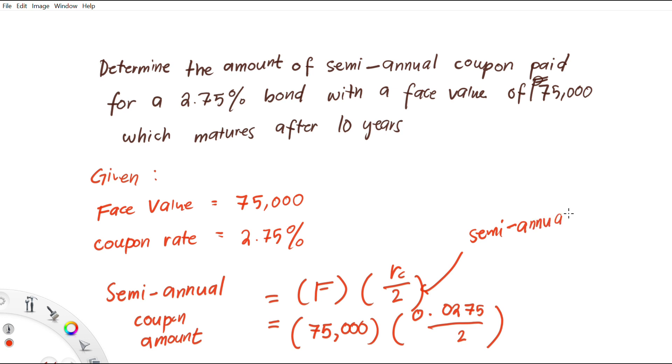If it's annual we have m equal to 1, if it's monthly we have 12, if it's quarterly we have 4, and if it's semi-annual we use 2. So in the problem we are looking for the semi-annual, so that's why the formula is F times r, the coupon rate, divided by 2.